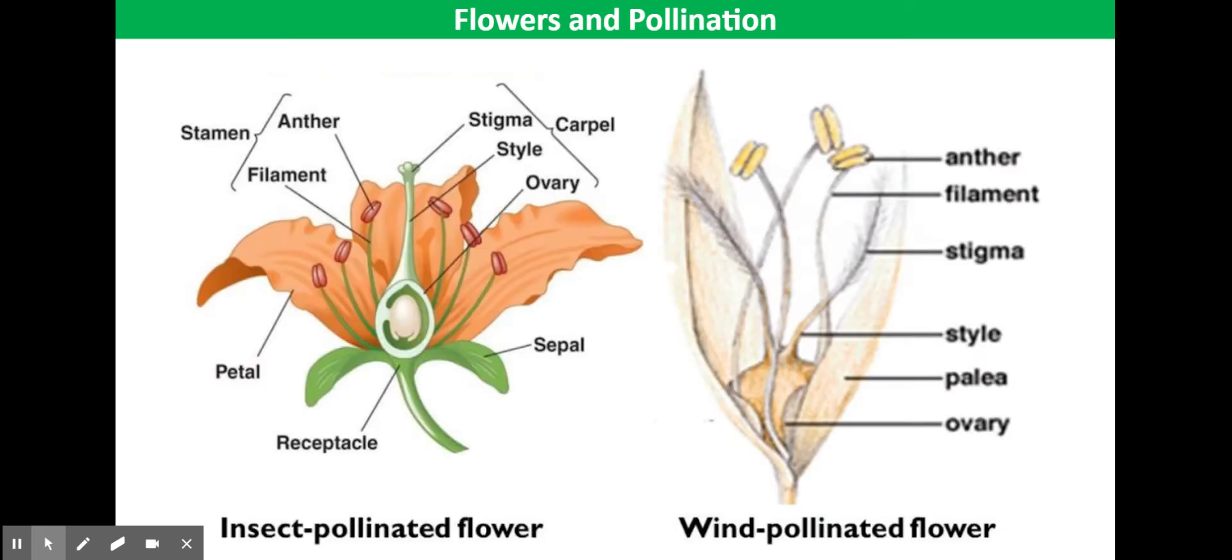Here is an image of an insect pollinated flower and a wind pollinated flower. During plant reproduction, pollen grains need to move from the anther to the stigma. This is called pollination.